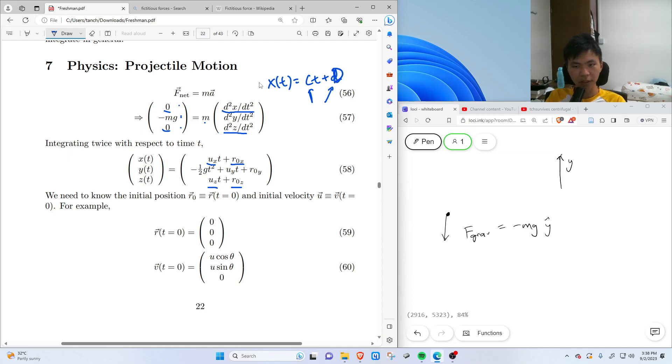But for X and Z, for Y, there's actually a minus MG here. So instead of just being linear with respect to time, Y as a function of time is actually quadratic, where the coefficient of the quadratic term, quadratic T squared here, is minus half G. And likewise, there's also initial Y component of velocity and initial Y component of position.